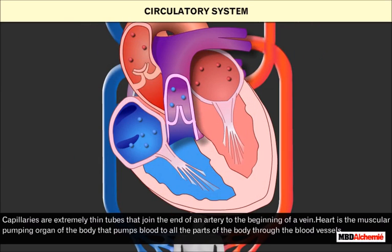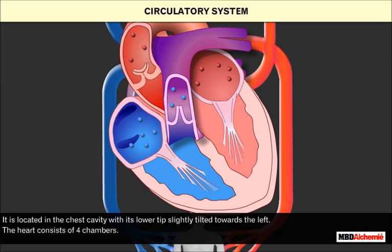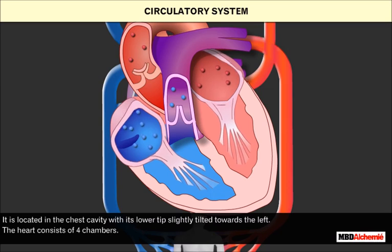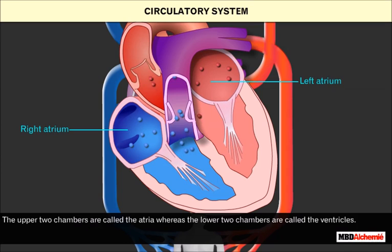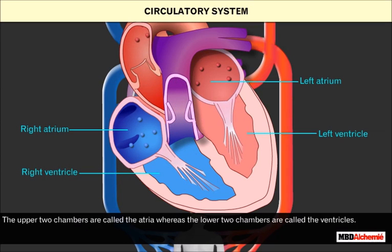The heart is the muscular pumping organ of the body that pumps blood to all parts of the body through the blood vessels. It is located in the chest cavity with its lower tip slightly tilted towards the left. The heart consists of four chambers. The upper two chambers are called the atria, whereas the lower two chambers are called the ventricles.